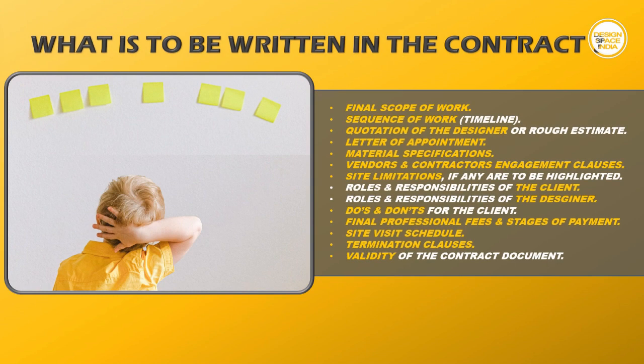What should be written in the contract agreement? It should include: final scope of work, sequence of work, quotation of the designer, rough estimate, letter of appointment, specification of materials, detailed list of vendors and contractor engagement clauses, site limitations if any, roles and responsibilities of the client and the designer, do's and don'ts for the client, final professional fees and stages of payment, site visit schedule, clauses of termination, and validity of the contract agreement. Each of these points can be variable due to factors like the type of the design project — for example, whether it is an end-to-end turnkey solution or a partial consultation service.